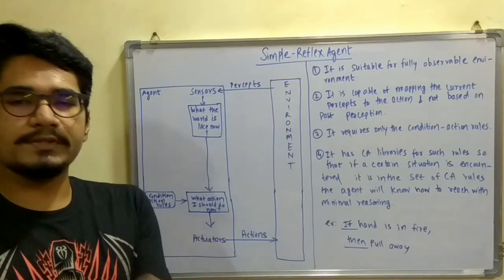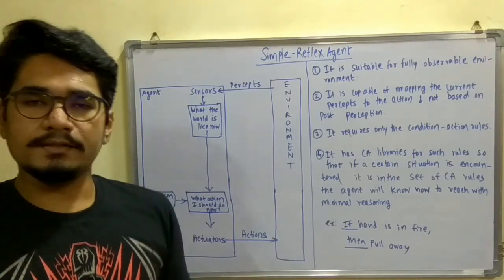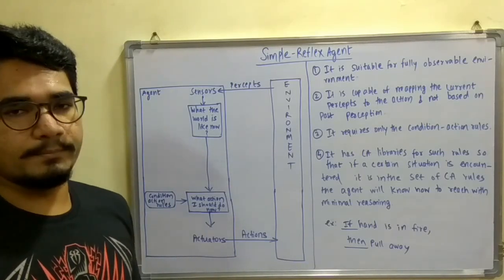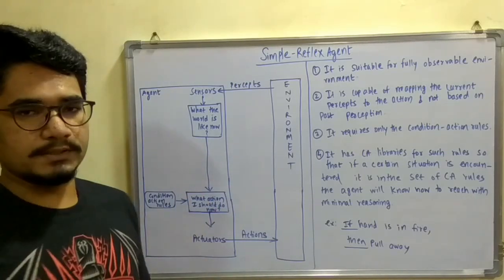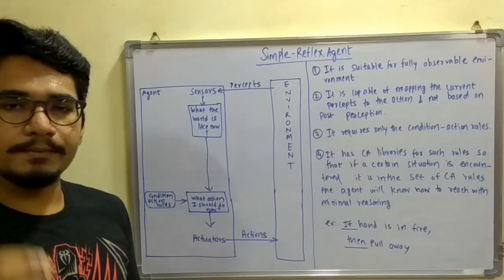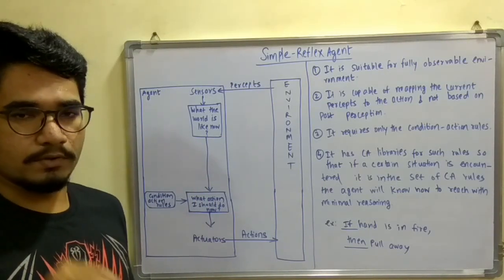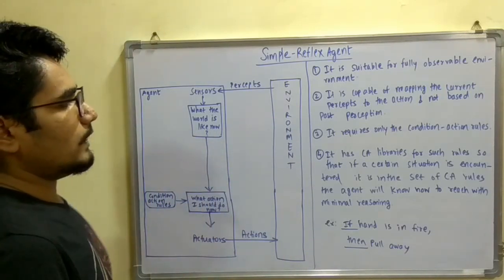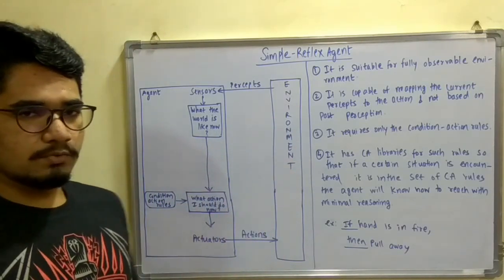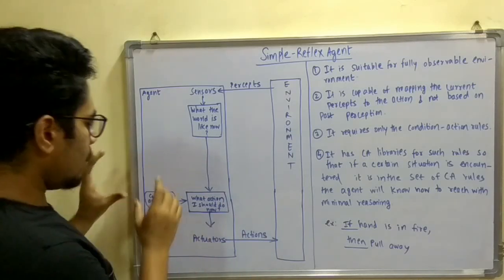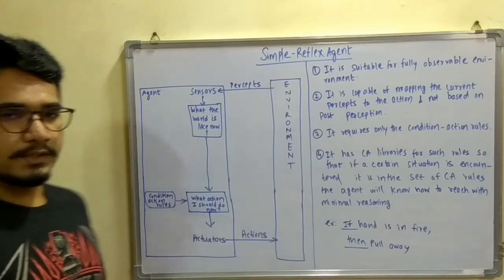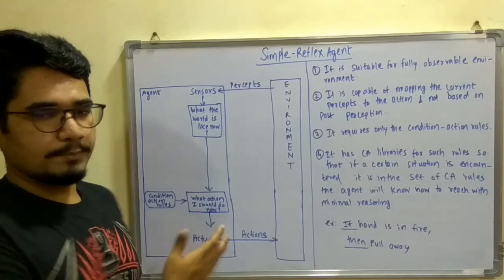Like in previous case, if it did some kind of activities, it will not store in its memory base and it flushes it out immediately. So whatever current inputs or current experiences you are giving to this agent, it will act based upon that. It requires only the condition action rules for this, like only one at a time condition action rule can be placed on it. That means only one if-then condition or some other condition can be put to the CA rules.